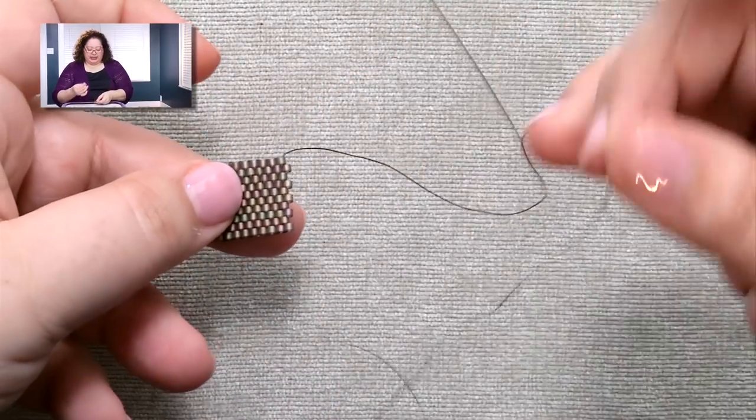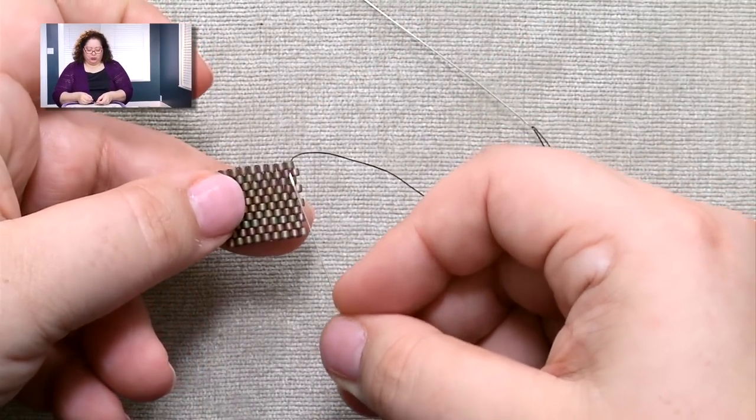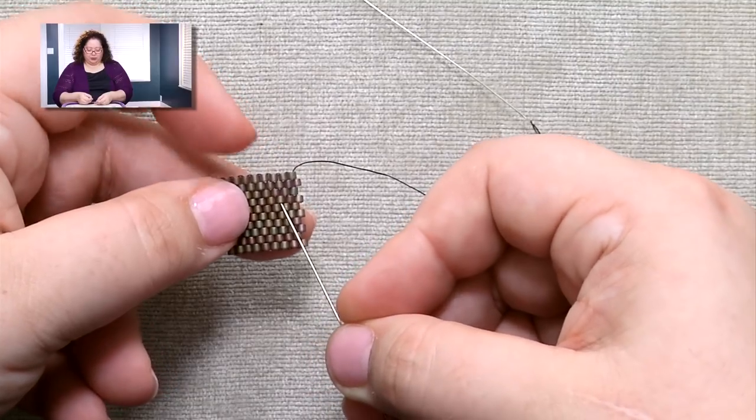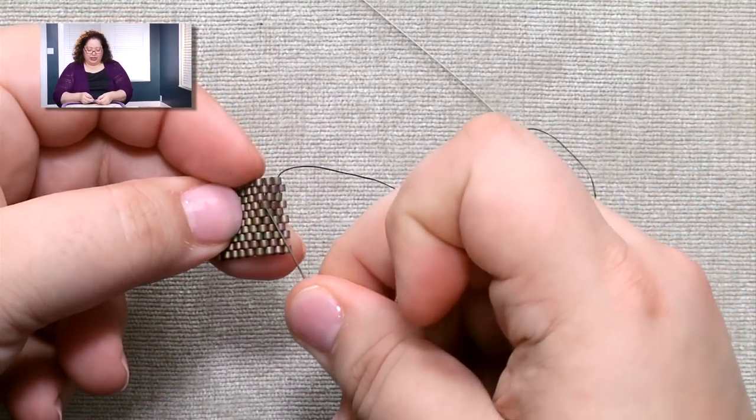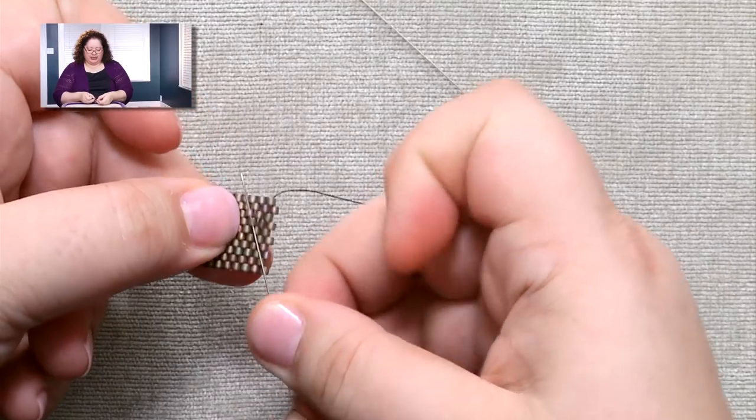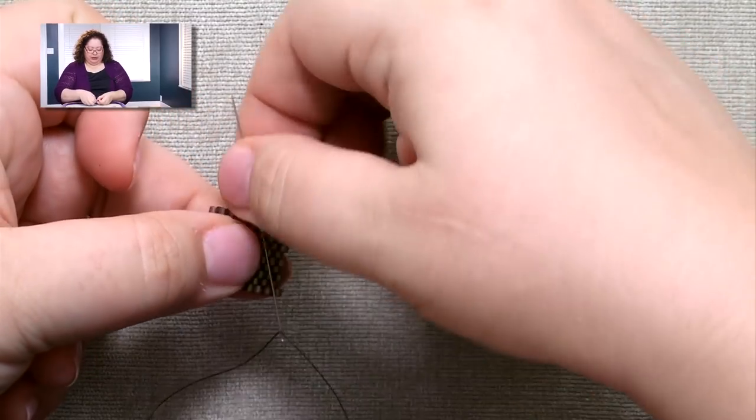So what I do is I get the new thread ready, and I'm just going to randomly pick a spot a couple rows back on a diagonal, and I'm just going to pass my needle through a couple of beads.